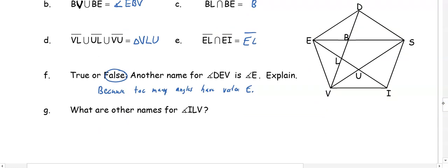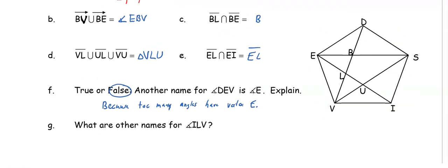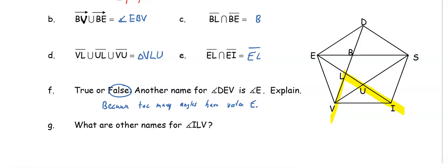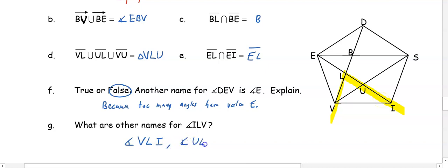In our last question, what are other names for angle ILV? Angle ILV has L as the vertex, so L must be in the middle of our names. We can switch the other two letters to get VLI. Because U is on the same line as I, we can substitute U for I — giving us angle ULV or angle VLU.